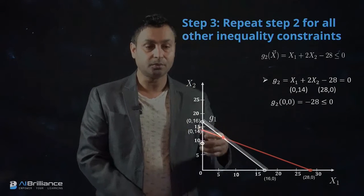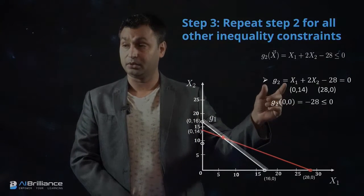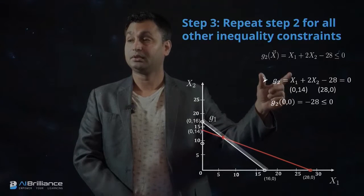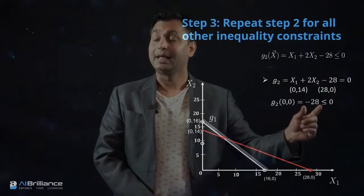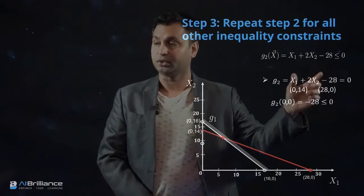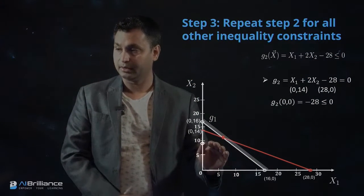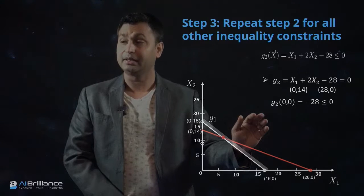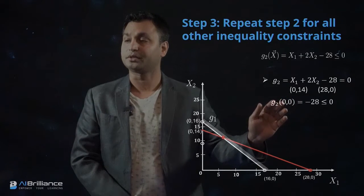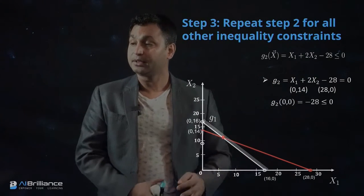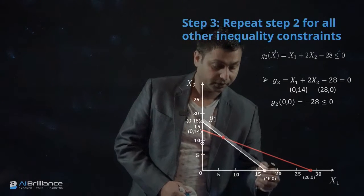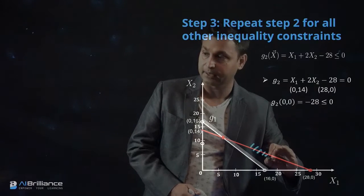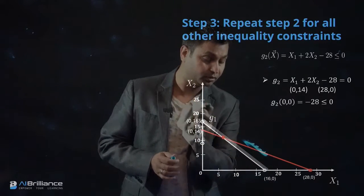Similar to the previous case, we substitute (0, 0) into G2 to check feasibility. Substituting gives G2(x) = -28, which is less than or equal to 0, so it satisfies the constraint. Therefore, the region on this side of the red line is feasible. Testing a point on the other side gives a positive value, which violates the constraint, making that side infeasible.